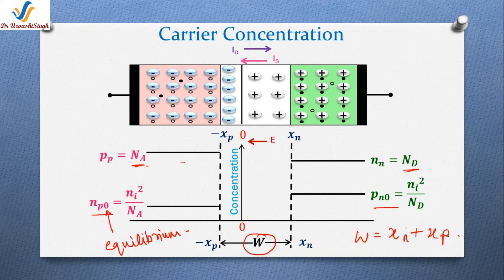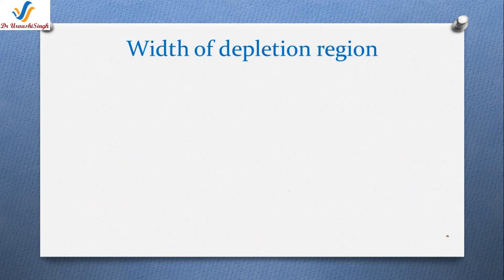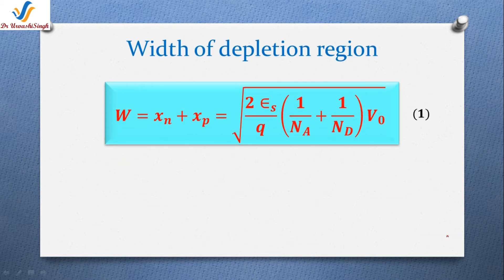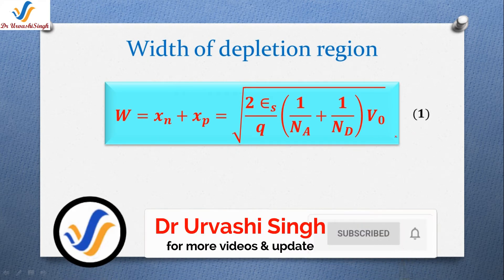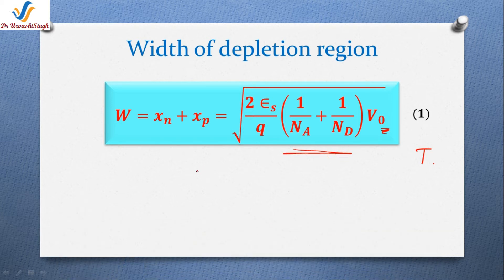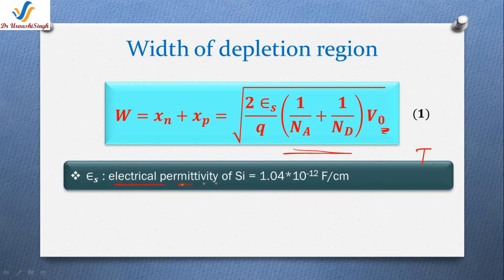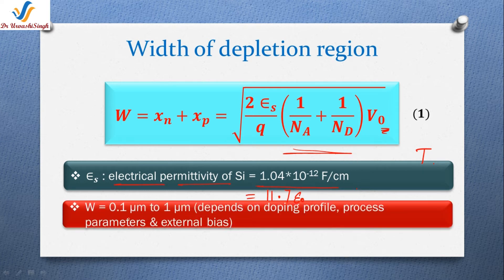From device physics, the width of the depletion region is given by equation 1. It is proportional to the barrier voltage and hence temperature, and is inversely proportional to the carrier concentration — this fact is very important. In equation 1, epsilon_s is the electrical permittivity of silicon, equal to 11.7 times the absolute permittivity. The width of the depletion layer ranges from a few micrometers to some micrometers.